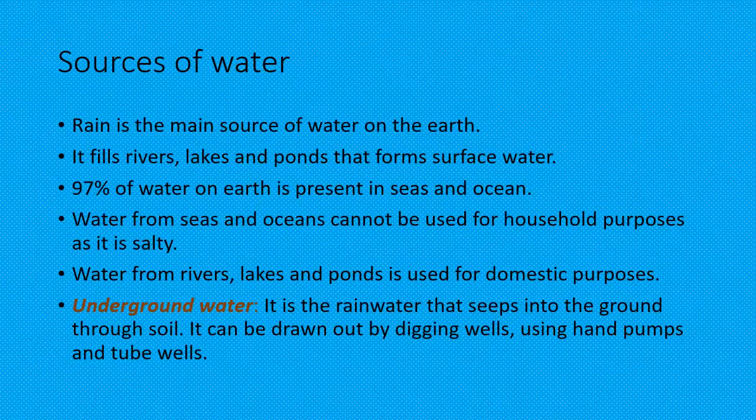Sources of Water: Rain is the main source of water on the earth. It fills rivers, lakes, and ponds that form surface water. 97% of water on earth is present in seas and oceans. Water from seas and oceans cannot be used for household purposes as it is salty. Water from rivers, lakes, and ponds is used for domestic purposes.